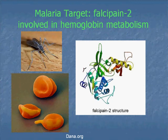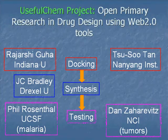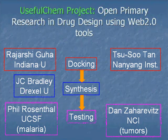Now to the synthesis part. We're a synthetic organic chemistry group, and our target is malaria, specifically falcipain 2. Malaria is a disease spread by mosquitoes, and the malarial parasite inside the red blood cell uses this enzyme falcipain 2 to metabolize hemoglobin. So if we can inhibit that enzyme, it can be a way to basically stop the process of it replicating. We've collaborated with a group at Indiana University — Rajarshi Guha — who does the docking, which basically means he takes the falcipain 2 structure and tests which compounds might fit and inhibit it. He tells us which compounds to make, and then we make them and ship them to UCSF, where Phil Rosenthal does the testing.